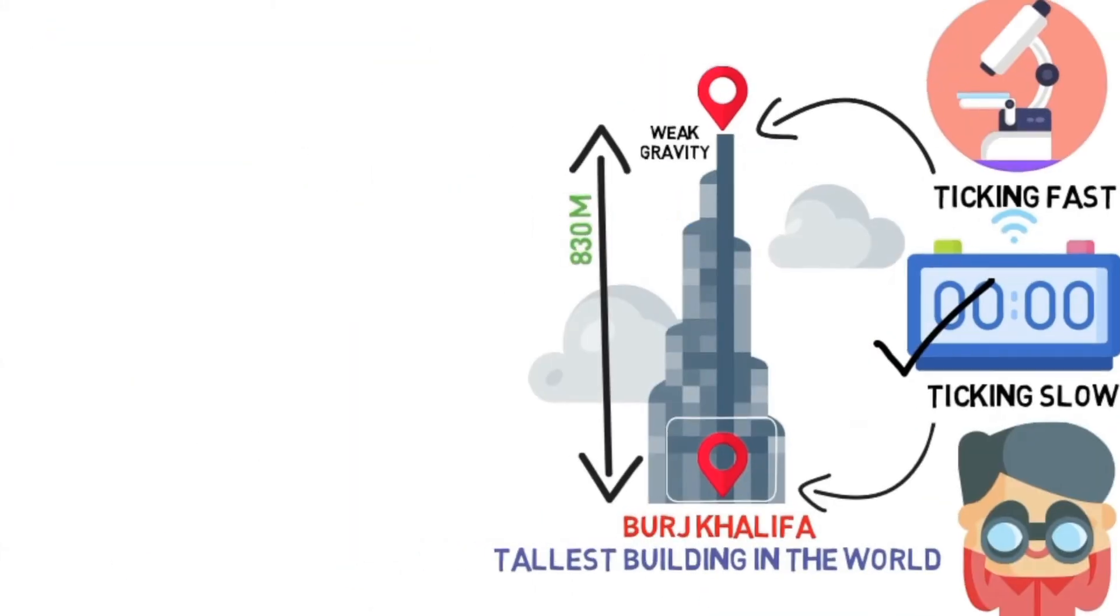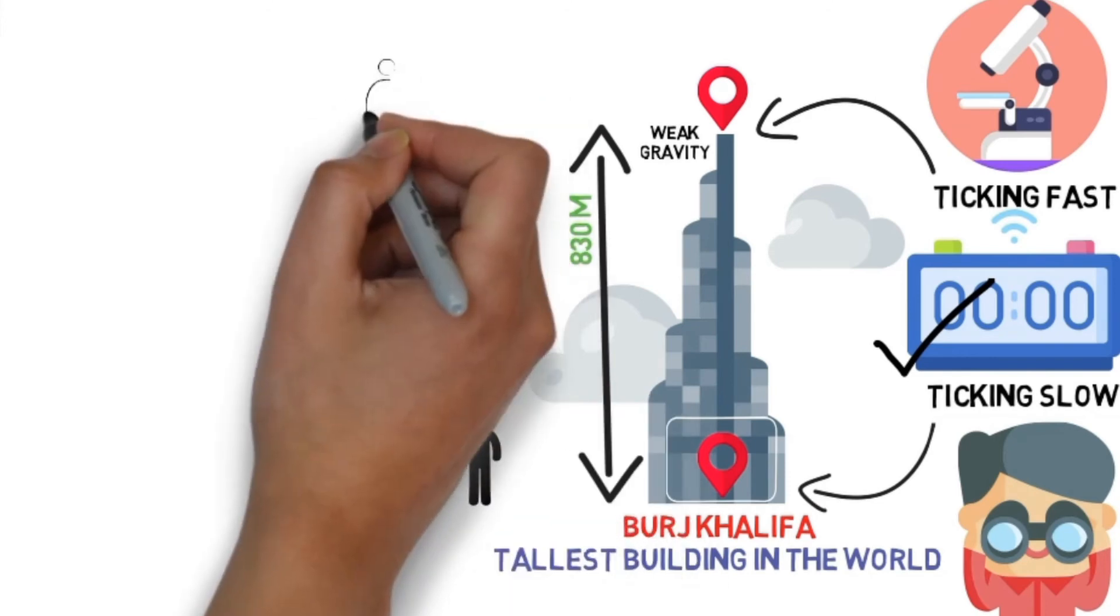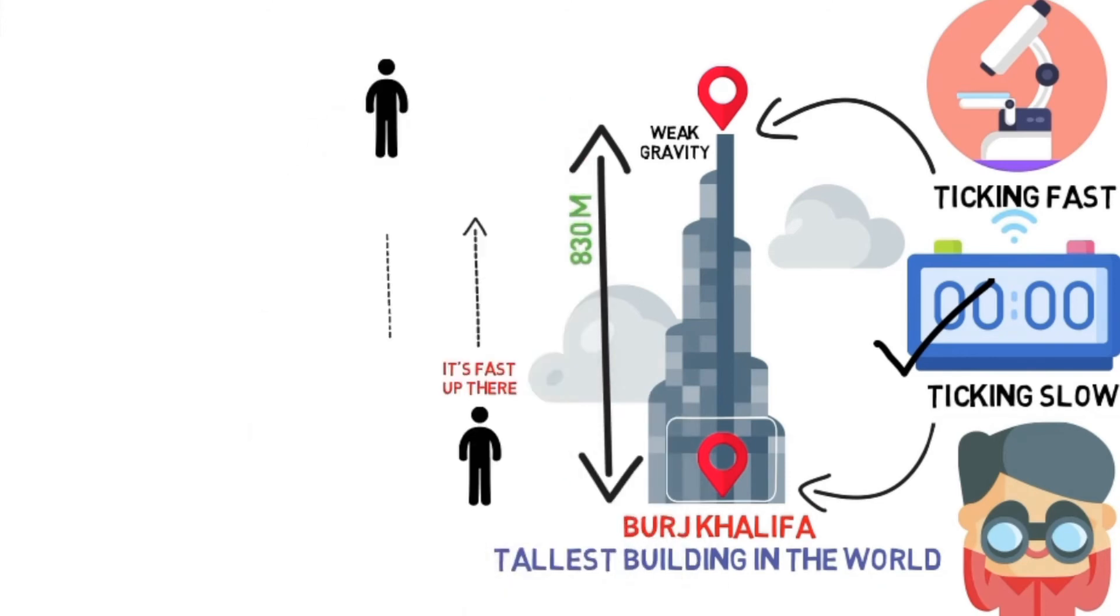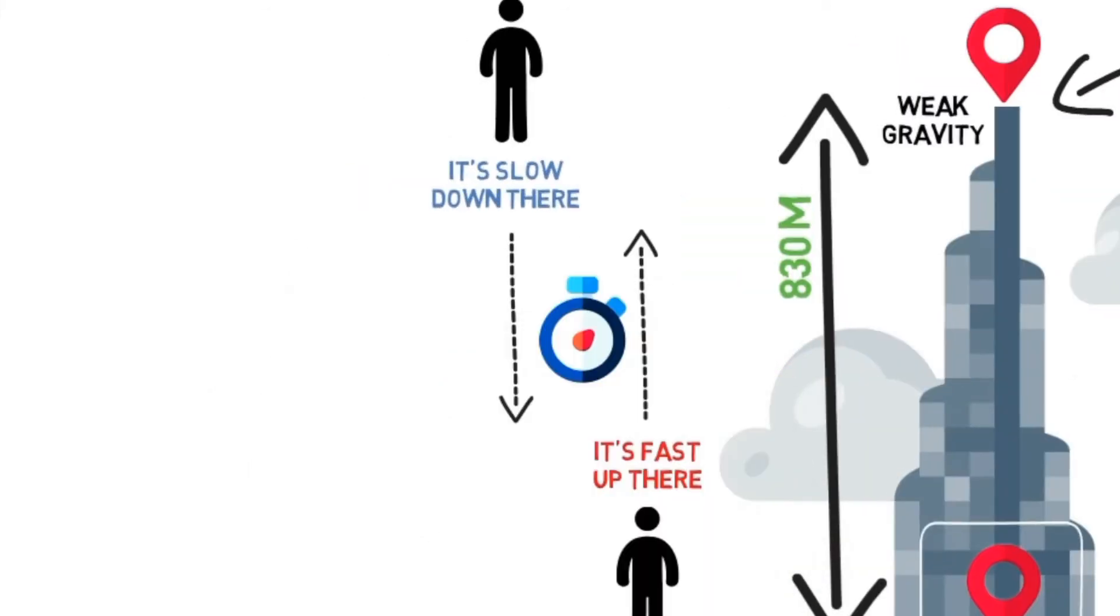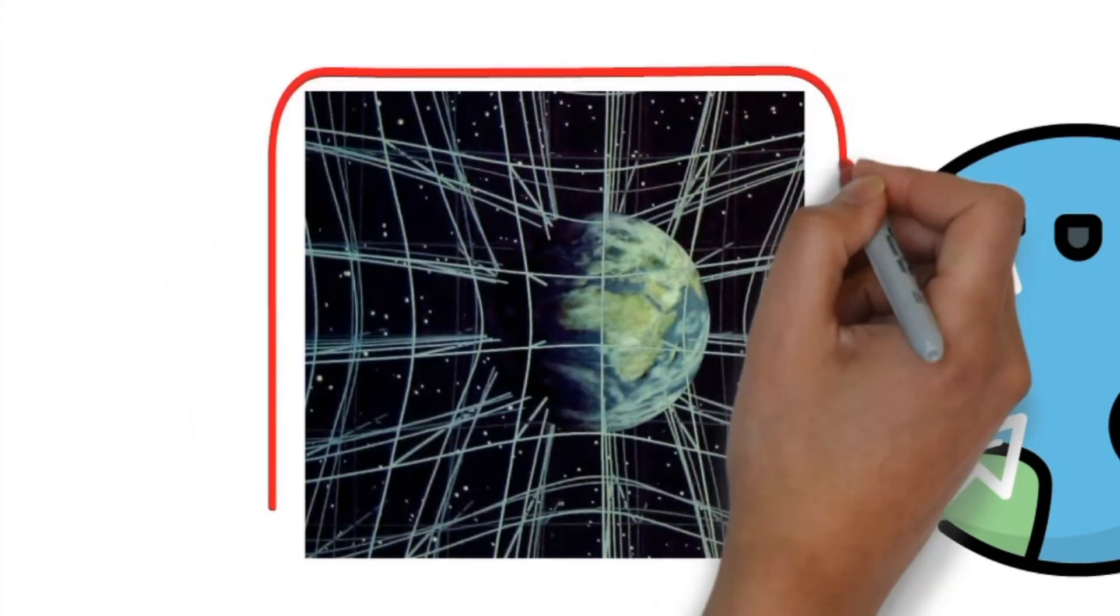A person in strong gravity sees his clock run normal and sees the clock in weak gravity run fast, while the person in weak gravity sees his clock run normal and the other clock run slow. Time itself is slowing down and speeding up because of the relativistic way in which mass warps space and time.